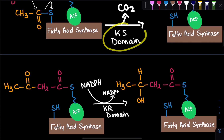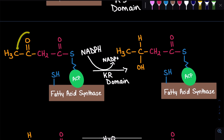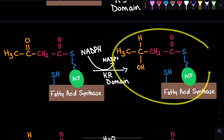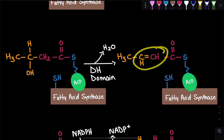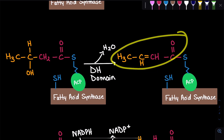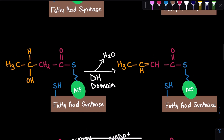At the KS domain, we formed a new carbon-carbon bond. At the KR domain, we reduced the double-bound oxygen. Now that we have beta-hydroxyl ACP, we are going to dehydrate it — remove water, lose an OH, and form a double bond between two carbons. This forms what we call enol ACP, and it happens at the DH domain — the dehydrogenase domain.